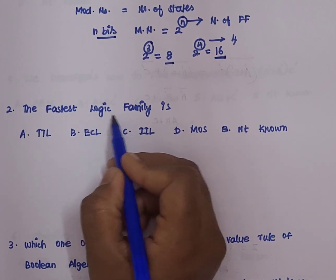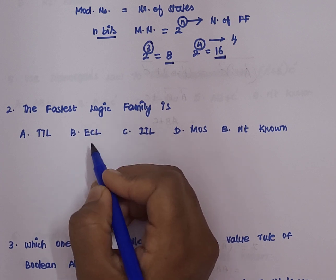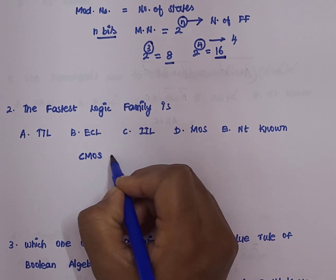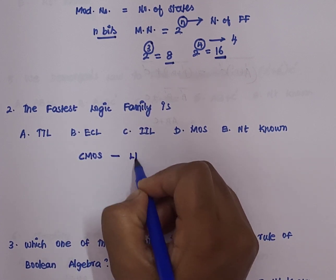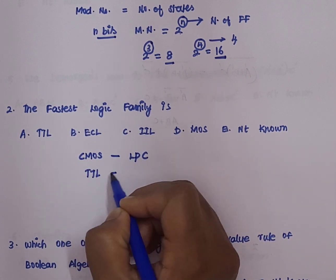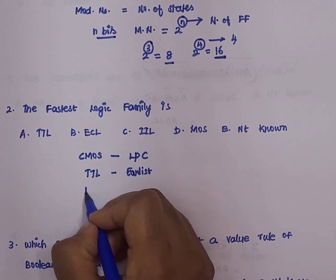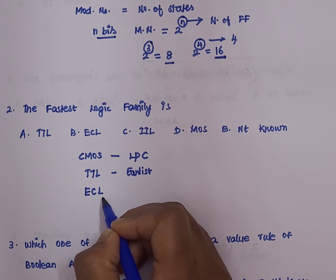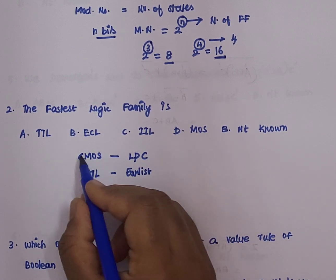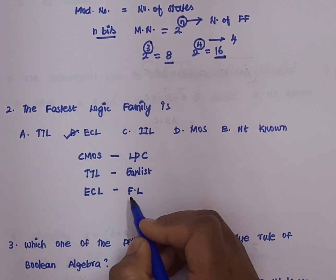The second question: the fastest logic family is? Logic families have different kinds and characteristics. For CMOS, the characteristic is low power consumption. TTL, transistor-transistor logic, is the earliest developed logic family. ECL, which is emitter-coupled logic, is the fastest of all the logic families. From the given options, ECL, which is option B, is the correct answer.